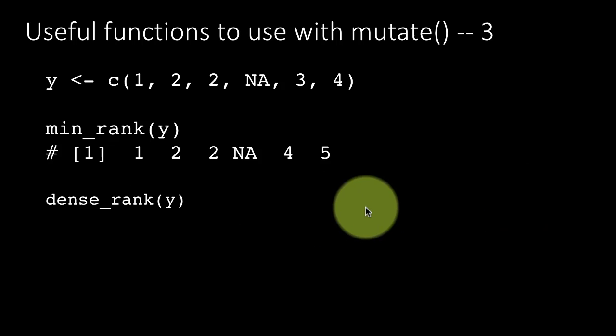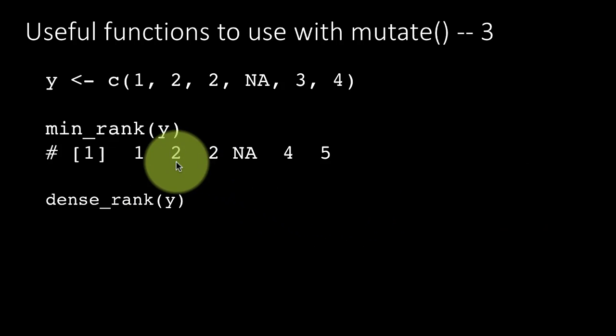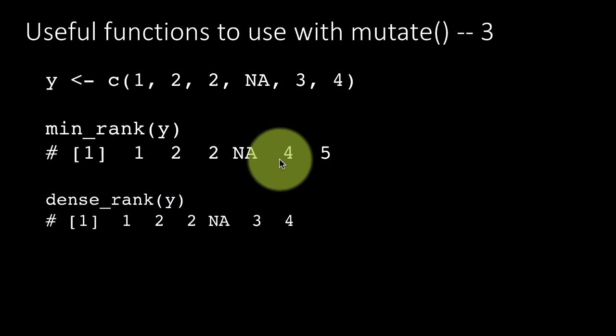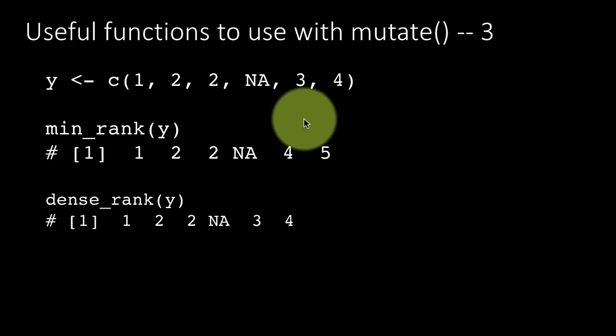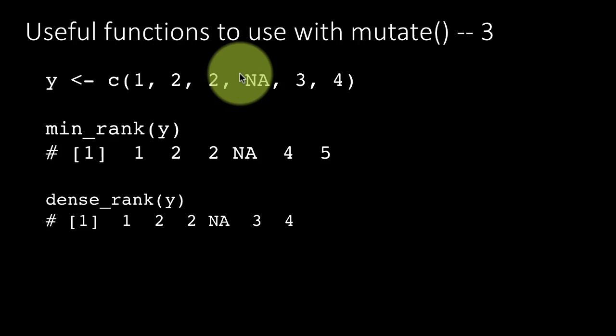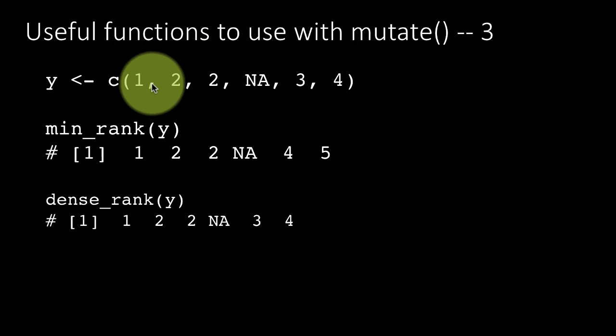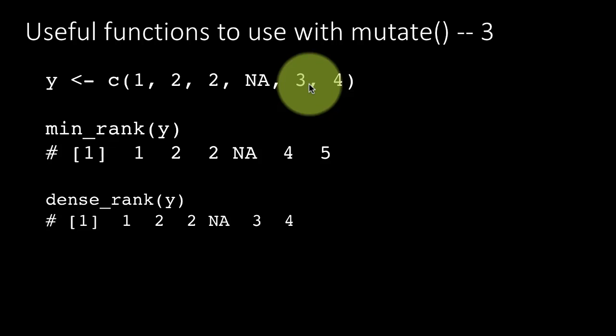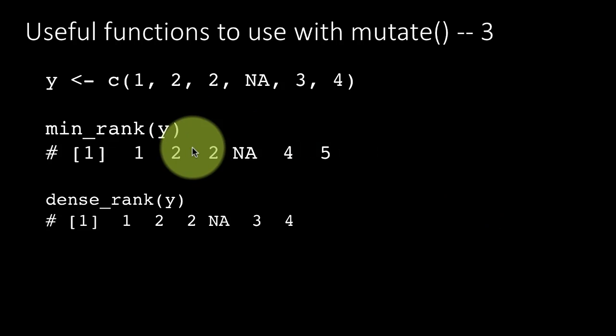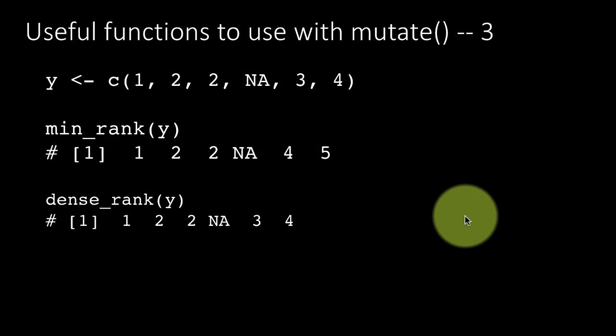There's another thing called dense_rank, which will not count these duplicates. So you will get this result: 1, 2, 2, NA, 3, 4. In the sense that 3 is the third highest element of the vector, not counting the fact that 2 has occurred twice. So this is the first rank, 2 is the second rank, 3 is the third rank, and 4 is the fourth rank. That's what you get here. So this is just an additional function. These are two additional functions that you can use with mutate.